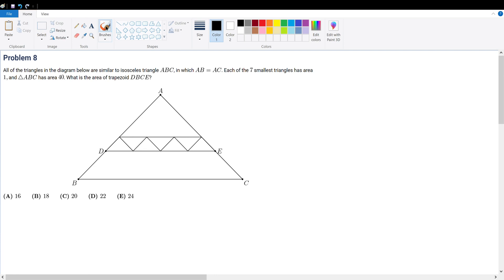Before we even approach this, we are given very special information, which is that the 7 smallest triangles all have the same area. If 2 triangles have the same area, then they both have the same height and base. So if that were to be the case, then let's say that this were to be x. Then this is also x and this is also x. Likewise, this is x, this is x, this is x, and this is also x.